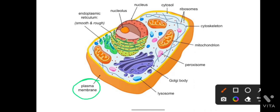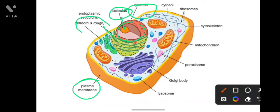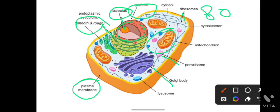Looking at the eukaryotic cell structure: there is a plasma membrane which protects the cell from outside. The nucleus is present and covered by a nuclear membrane. There is endoplasmic reticulum of both smooth and rough types. Mitochondria are present, along with the Golgi body, peroxisomes, and 80S type ribosomes. This is the eukaryotic cell structure.